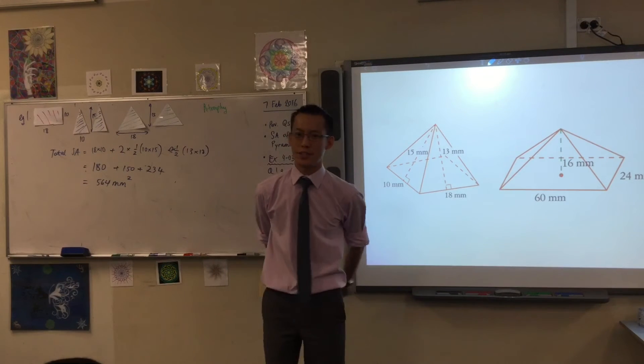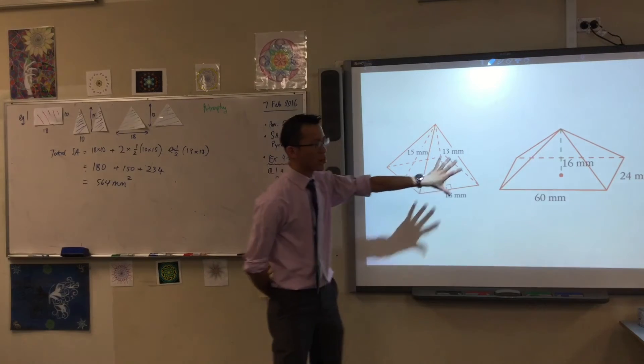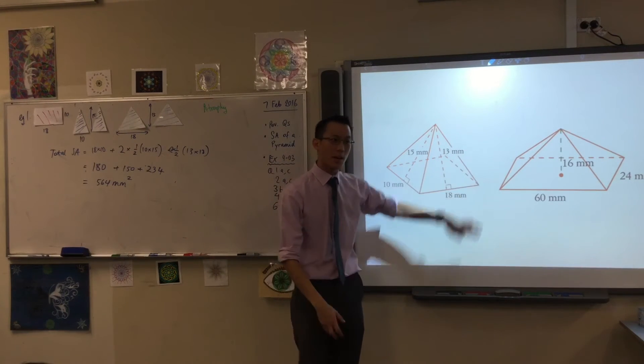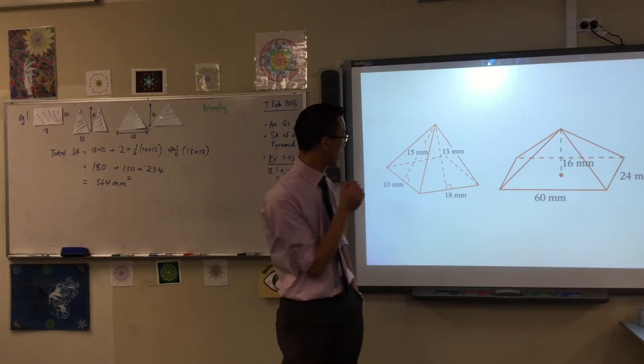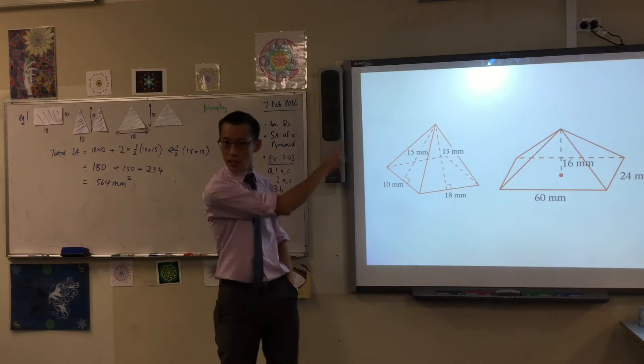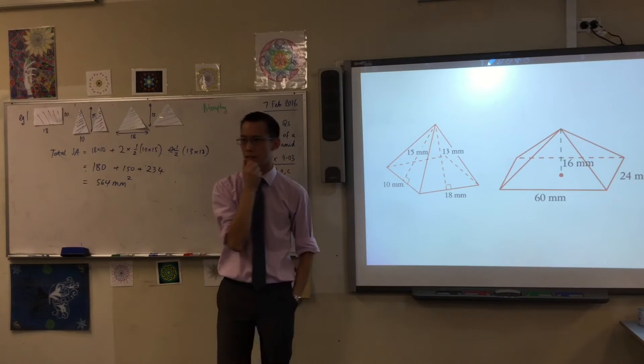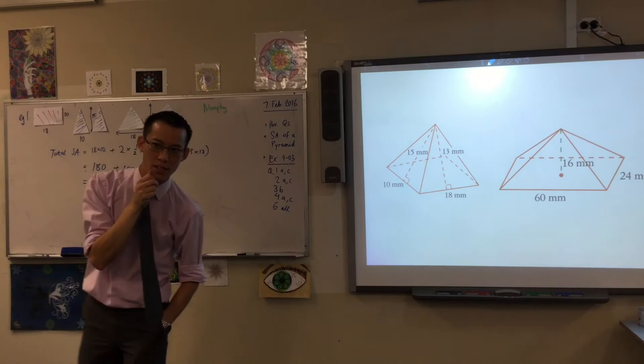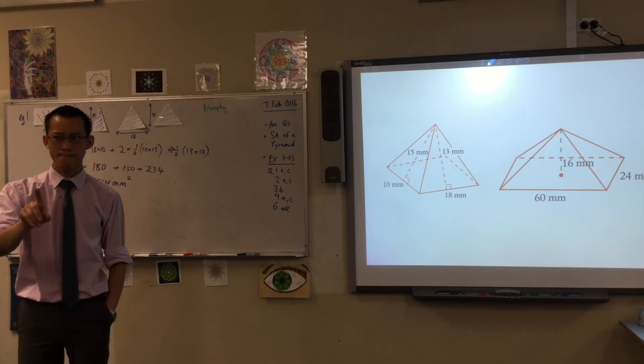Now just put your pens down for a second. I'll show you the second example but I'm going to show it on here and then I'm going to leave it up so you will be able to catch up in a second. I just want you to watch what's going on because this is what's tricky. Have a look at the second triangle pyramid and see how it differs from the first. How is the second pyramid different? Think for a second.